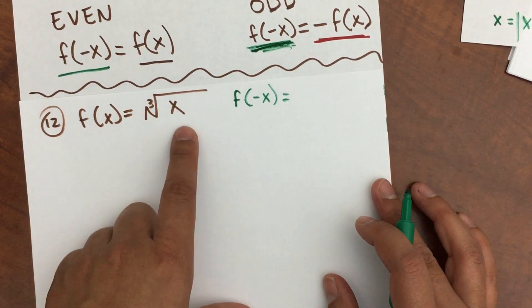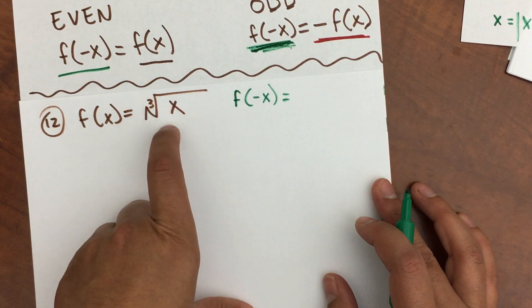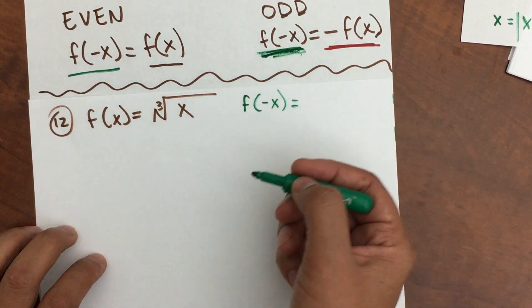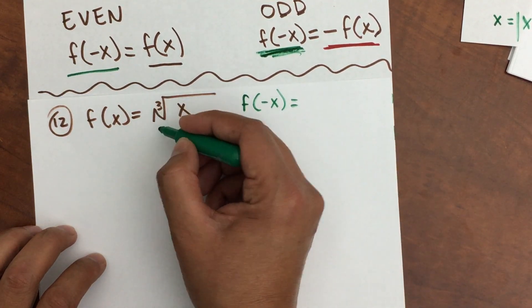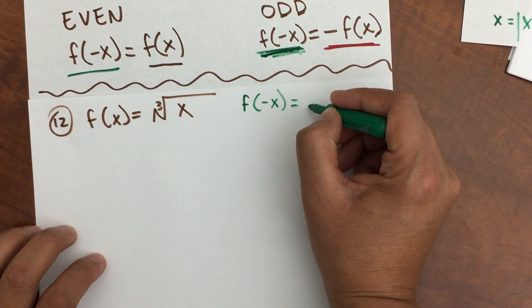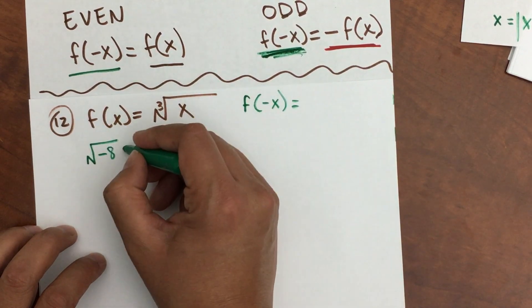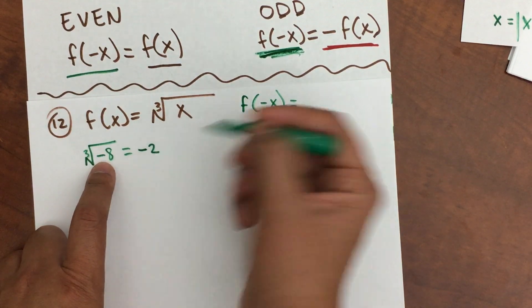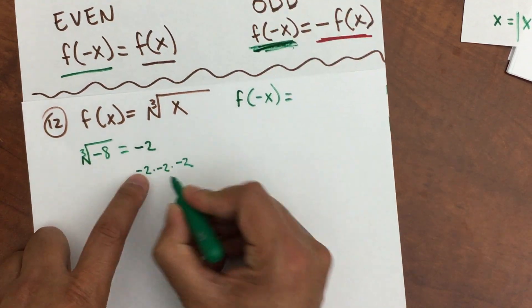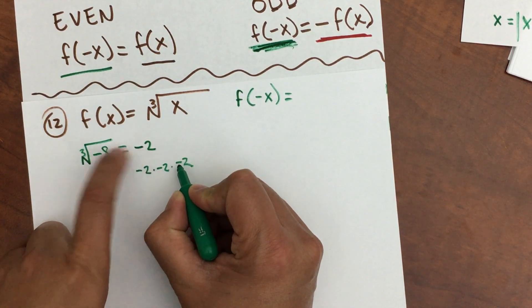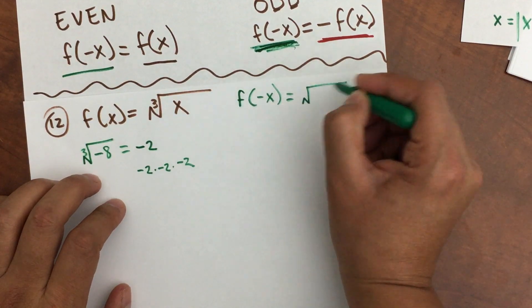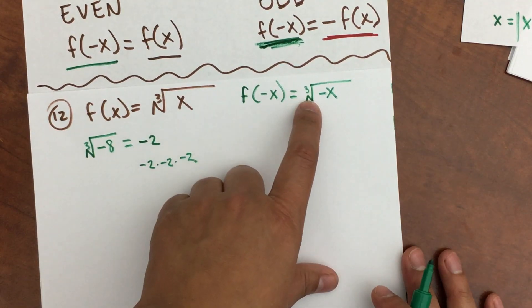This one is tricky. For the square root, you cannot have a negative inside — otherwise it becomes an imaginary number. But the cubic root is different: it means you're looking for a number that multiplies by itself three times to equal the number inside. You can get answers for negatives — for example, the cubic root of negative eight is negative two, because negative two times negative two times negative two equals negative eight. So you are able to get the cubic root of a negative number, and we're going to have the cubic root of negative x for f of negative x.